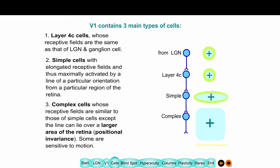In layers above and below layer 4C, one finds complex cells. This particular complex cell prefers a horizontal line, but it doesn't matter where exactly the horizontal line is — it has a large space in which the line can be. A simple cell requires the line to be right in the center of its receptive field. So the complex cell is becoming more positionally invariant. Some complex cells also prefer horizontal or vertical lines that are moving — lines of a particular orientation.